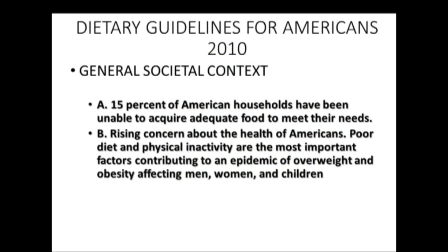Five years later, the Dietary Guidelines for Americans 2010 focused on key social issues: first, poverty, and second, the rising prevalence of overweight and obesity among men, women, and children. At that time, 15% of American households had not been able to acquire adequate food to meet their needs on a regular basis. Poor diet and poor levels of physical activity were most importantly contributing to the epidemic of overweight and obesity in the adult and pediatric population.